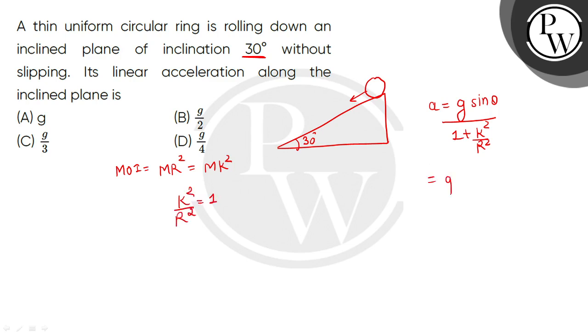Put it here. The angle of inclination is 30 degrees. 1 plus 1, k square divided by r square value is 1. Put it here: 1 by 2, then divide by 2. So here will be g by 4.